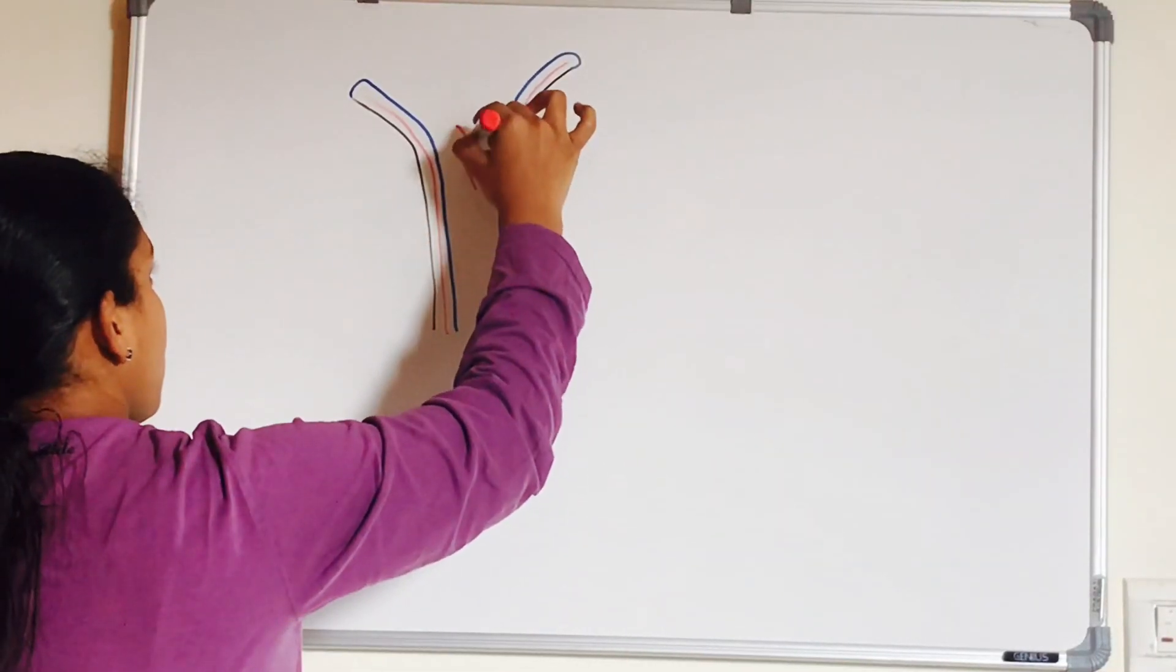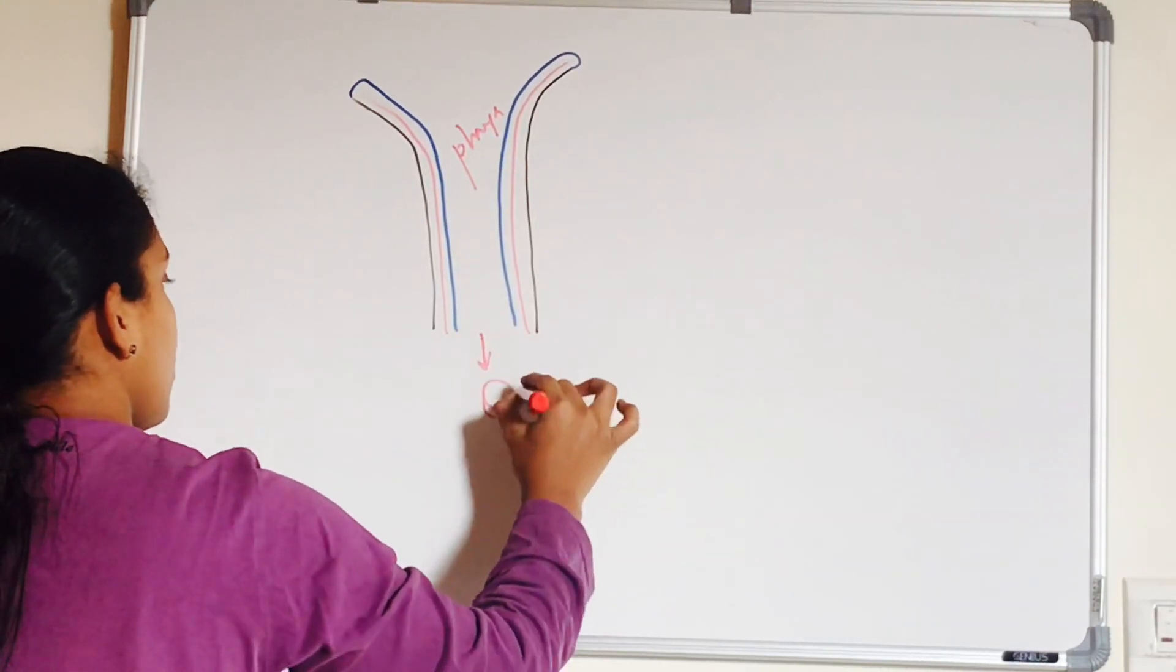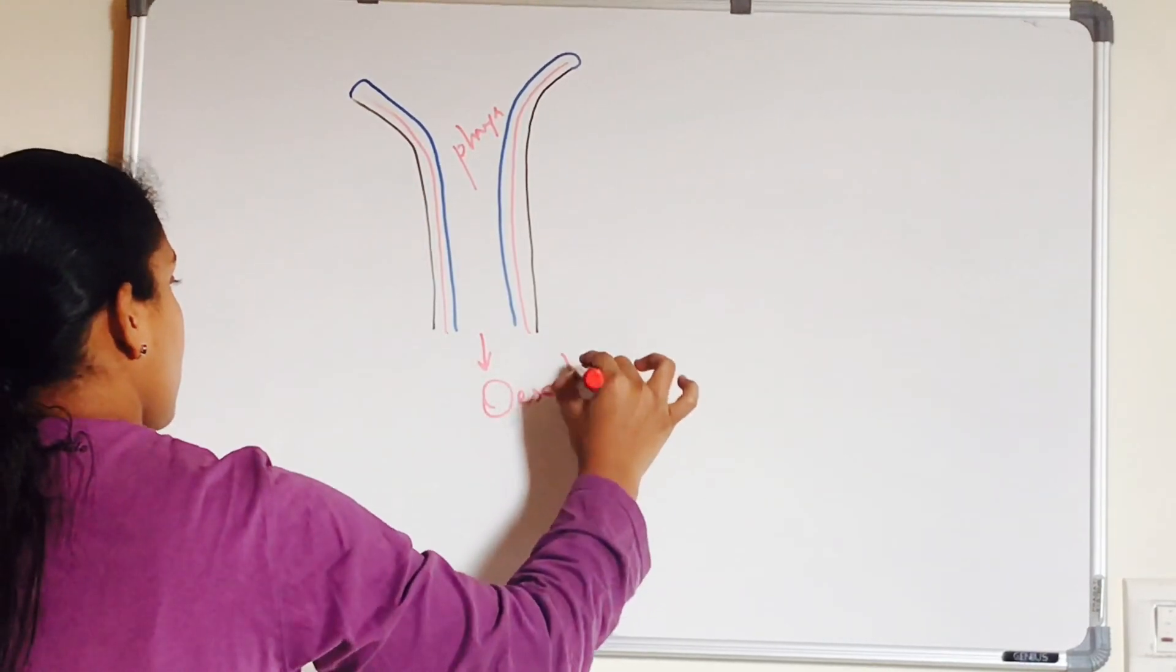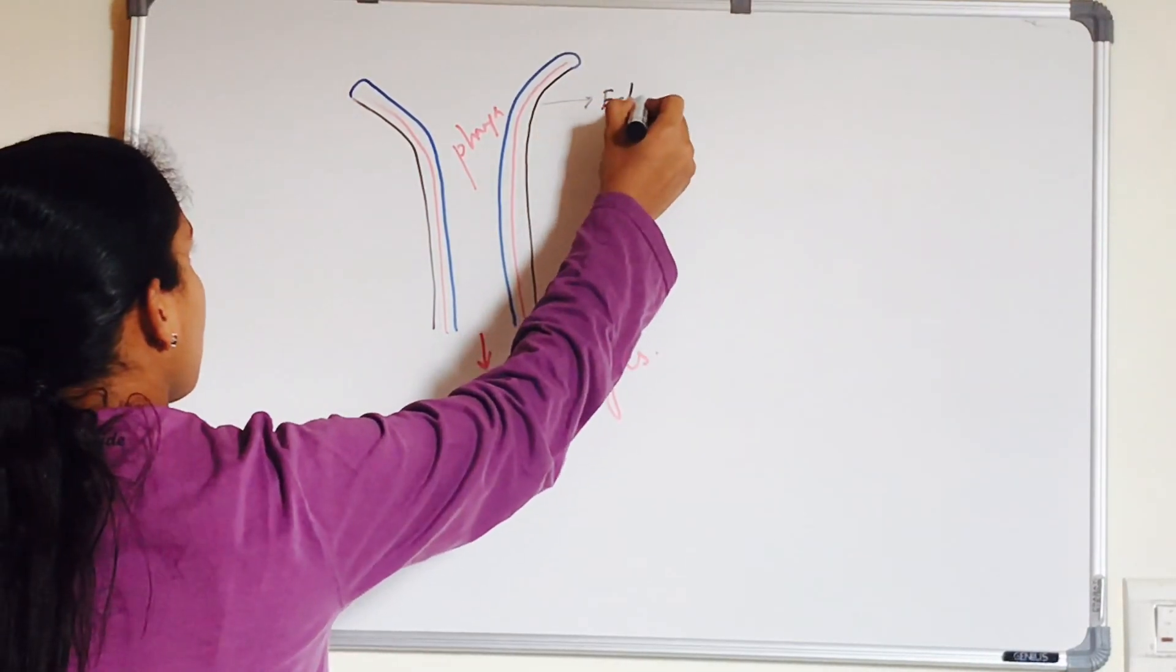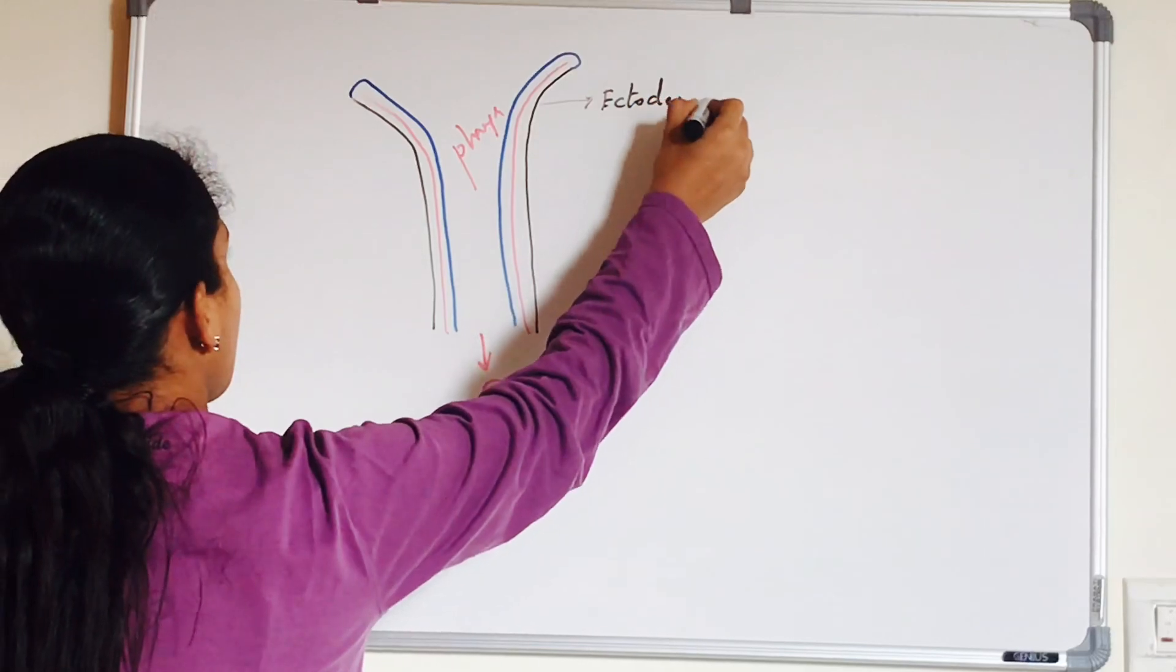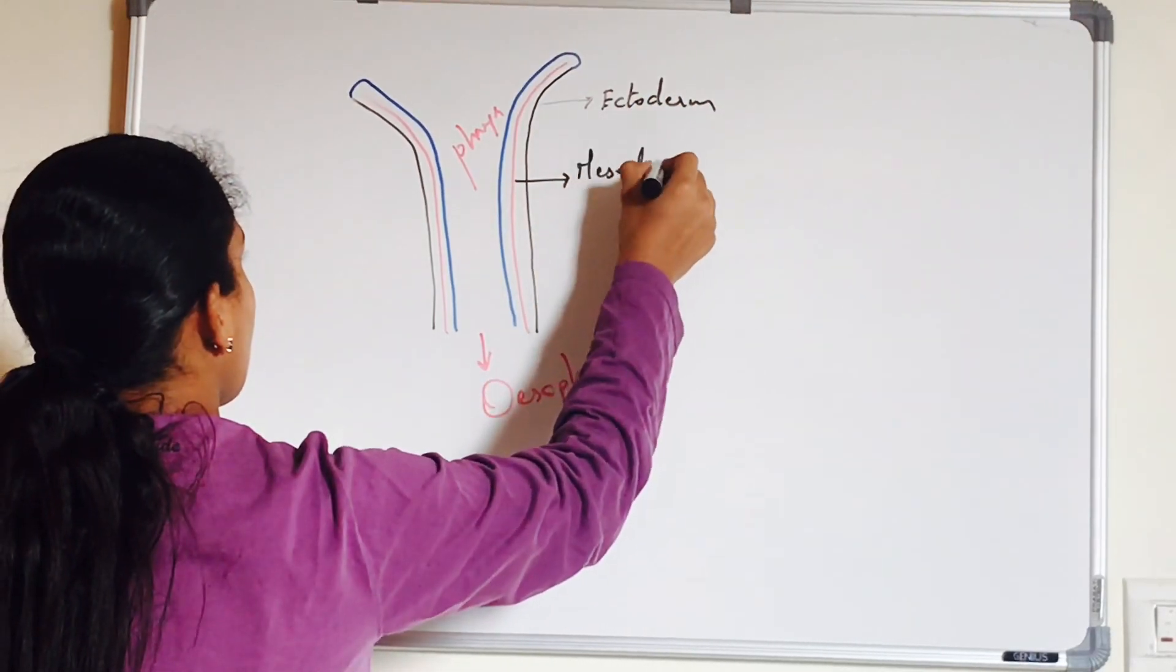So this is about the ventral wall. Dorsally we know there is notochord, hindbrain vesicles, you also have pair of dorsal aorta. And laterally we have splanchnic mesoderm on both sides.